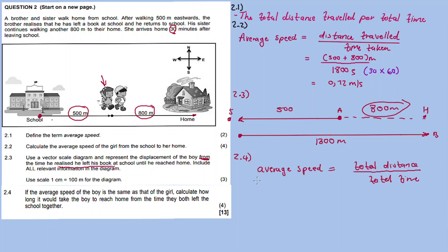The average speed of the boy is the same as that of the girl, so it's 0.72 m/s. The total distance — this is the critical part to get right in this equation.